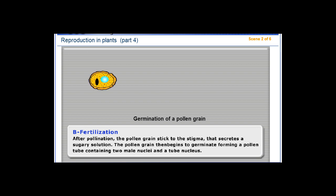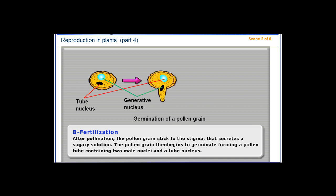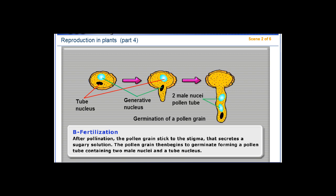After pollination, the pollen grains stick to the stigma that secretes a sugary solution. The pollen grain then begins to germinate, forming a pollen tube containing two male nuclei and a tube nucleus.